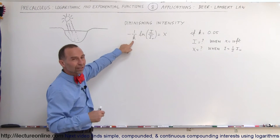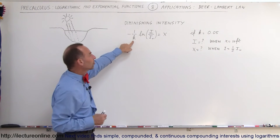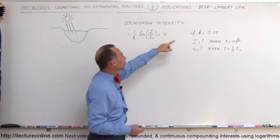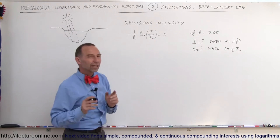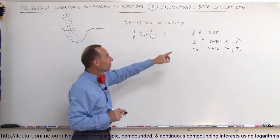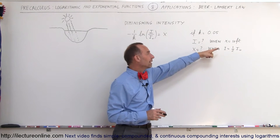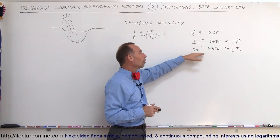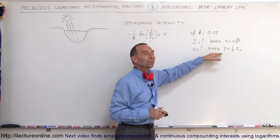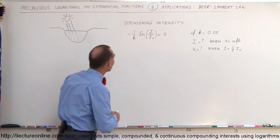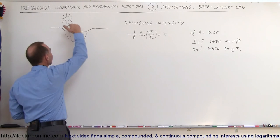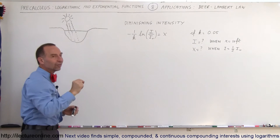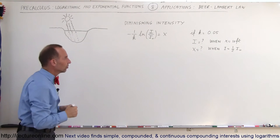Here, k is a constant that depends upon the material. For a particular lake, k is equal to 0.05. We need to find the intensity when we're 10 feet into the water, and also how far down we need to go for the intensity to be one-half the original intensity. Notice that as light enters the water and goes further down, the intensity diminishes with distance.